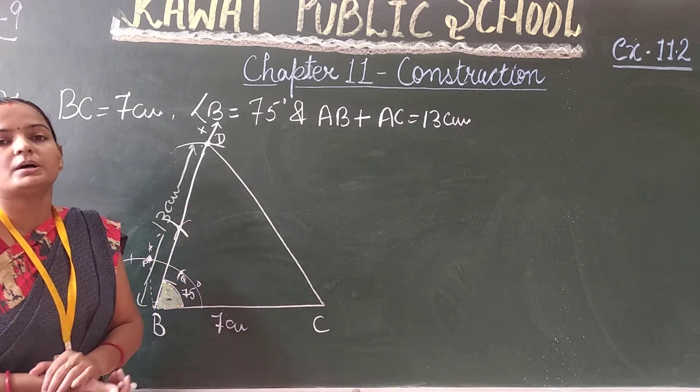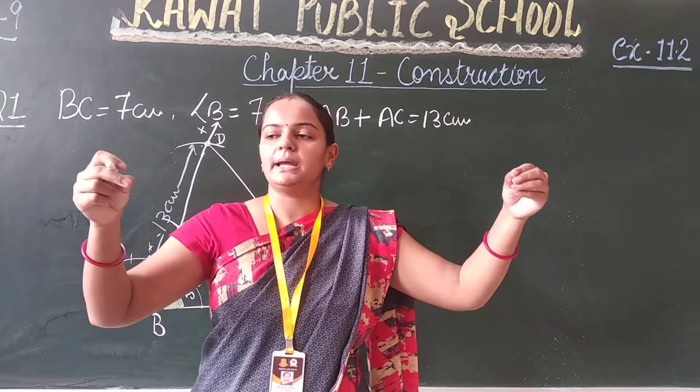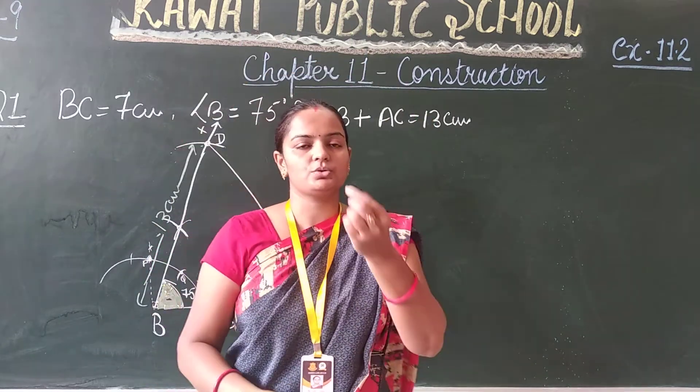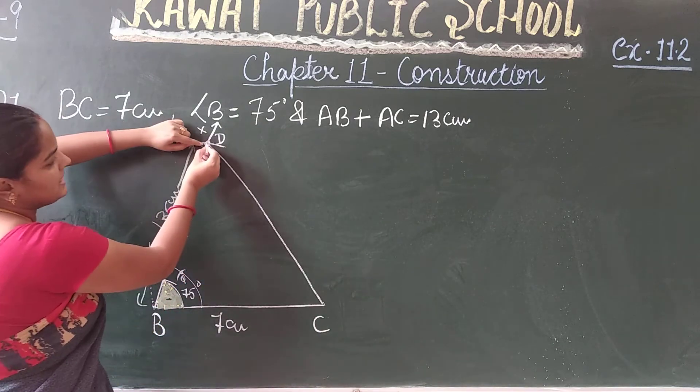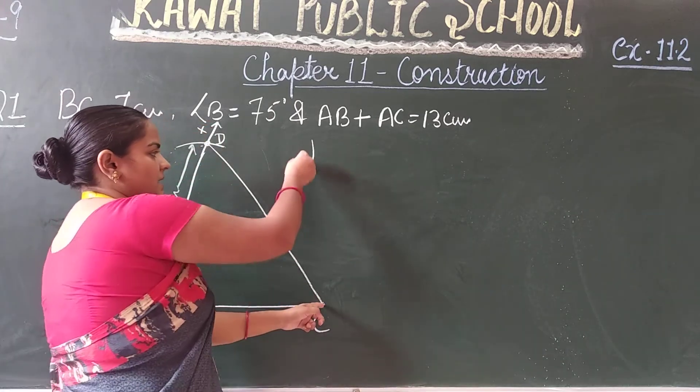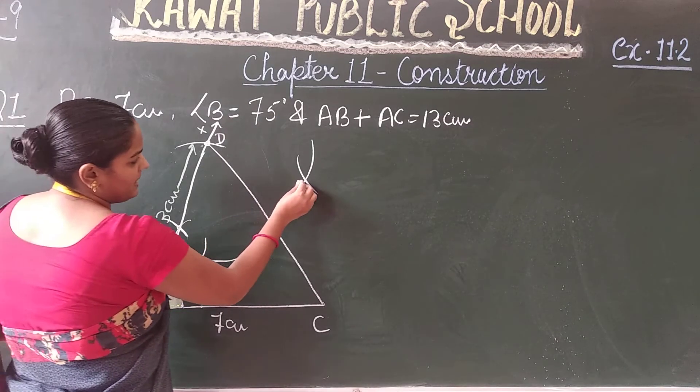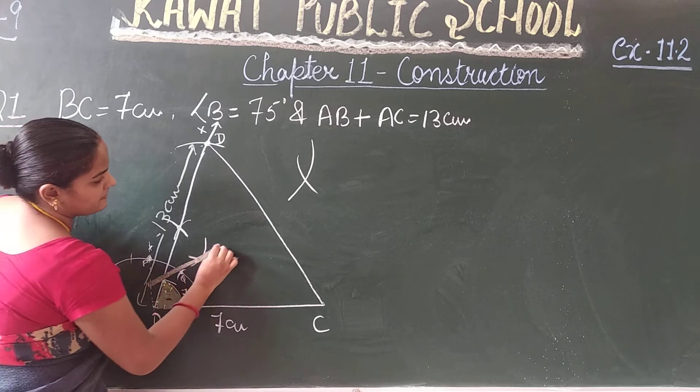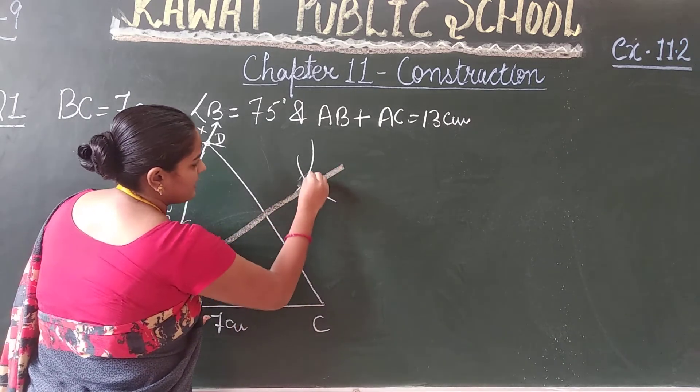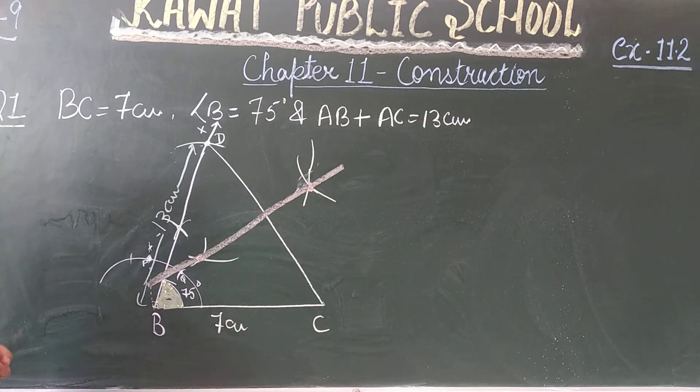Draw perpendicular bisector of CD. Perpendicular bisector of CD line. If you want to draw a perpendicular bisector of CD line, open the compass more than half of CD, draw upper cut and lower cut. From here also draw upper cut and lower cut. Now join the intersection points. This line, the intersection point with the line, will give point A. Now you have a triangle.